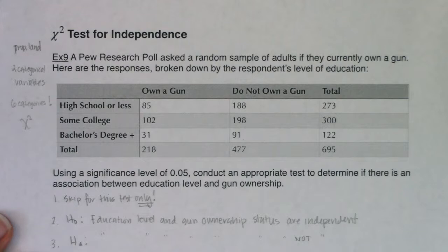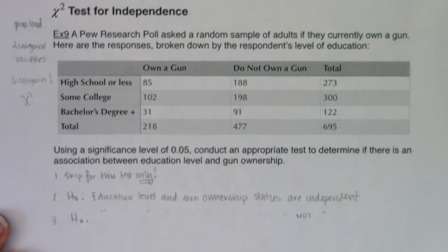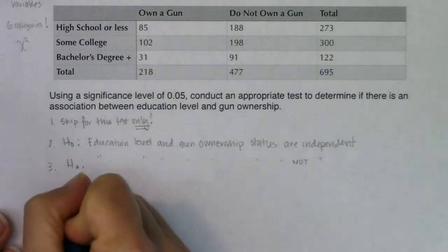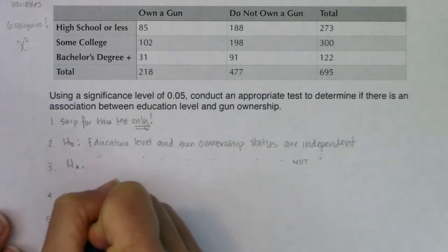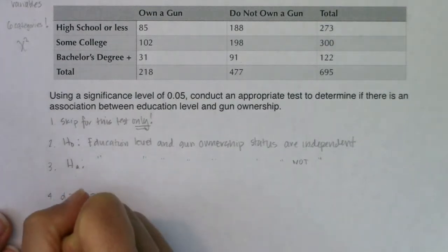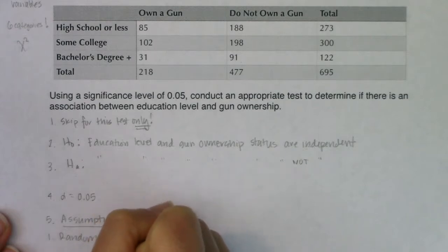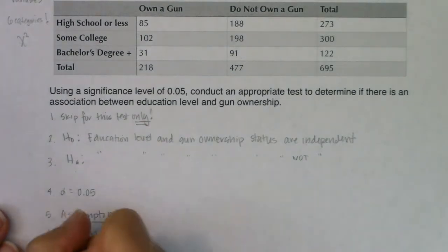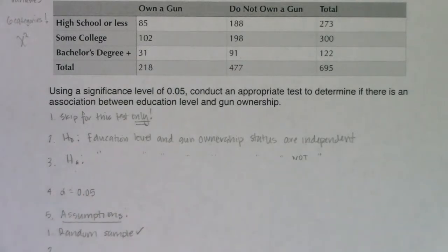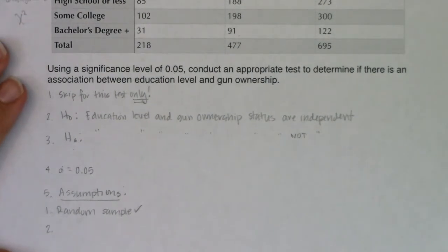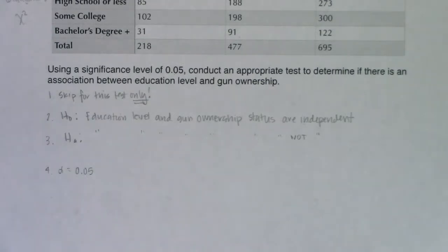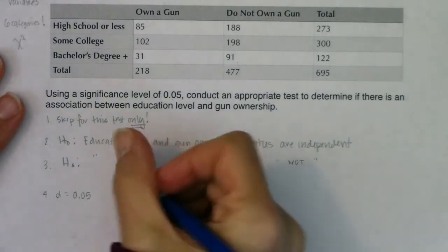Step four: pick our alpha level. I would default to 5%, and that's what was given in this case, so alpha equals 0.05. Now let's talk about our assumptions. For assumptions, I need a random sample, which was stated, so I'm fine with that. The real fun kicks in when doing a chi-squared test for independence in terms of how you get your expected counts — it's very different from the chi-squared goodness of fit.